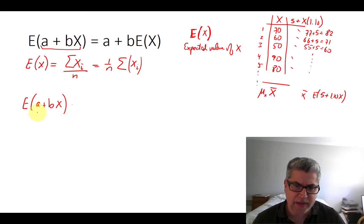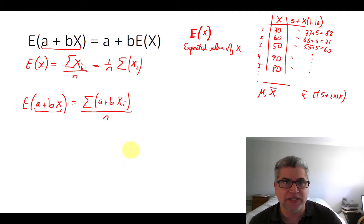In other words, what is the expectation of this five plus 1.10x? We just plug this in for x up here. So it's the sum of a plus bx, all of these, and then we divide by n.